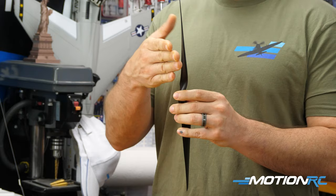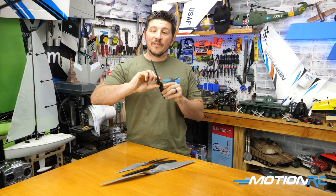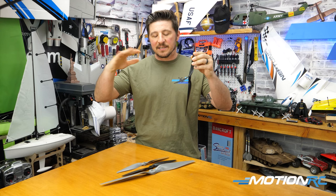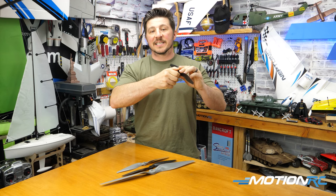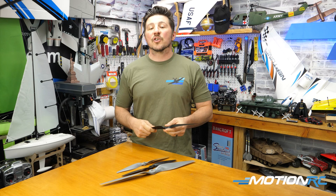Now it doesn't necessarily have anything to do with a physical measurement of 8 inches of pitch. What it's really telling you is that in one revolution, in a stable platform, with no wind resistance, no speed behind it, not attached to an engine — if you rotate this propeller 360 degrees, it will move 8 inches. Whereas if it was a 6-inch pitch propeller, it would move 6 inches at 360 degrees. A 3-inch pitch would move 3 inches.